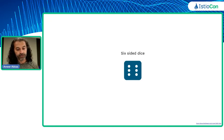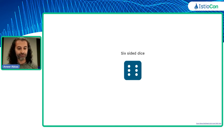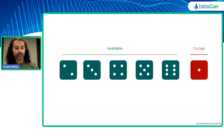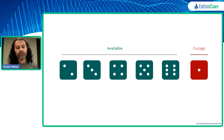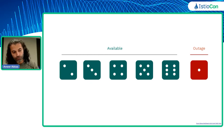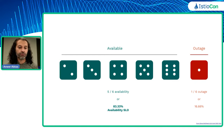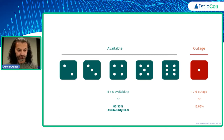We're going to explain this with dice — an inspiration from Steve McGee's talk at SLOconf last year. Imagine a six-sided die that describes a system or service. If it rolls anything but a one, the system is considered available; if it rolls a one, that's an outage. So two through six is available, one is an outage — meaning 83.33% of the time the system is up, and 16.66% of the time it's down. Not a great SLO, but it works for our example.